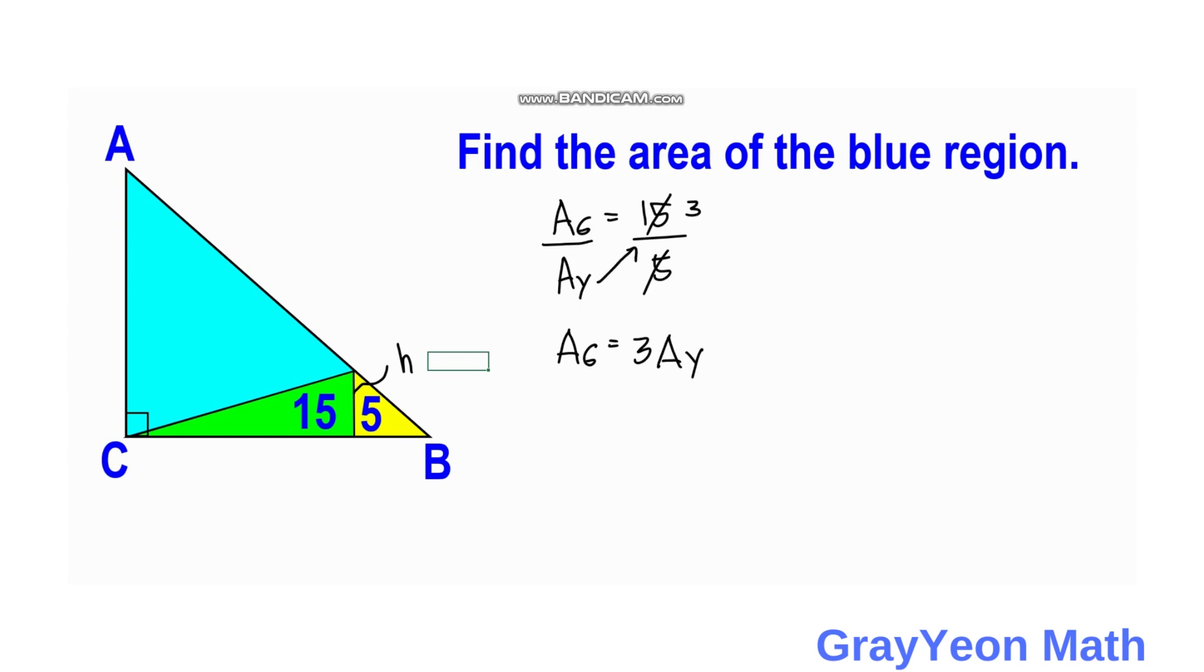You divide this, it becomes 3. And you of course multiply it. Area of the green is equal to 3 times area of the yellow. And area of the green is actually one-half times the base, let's call the base as bg for the green, and for the height h.